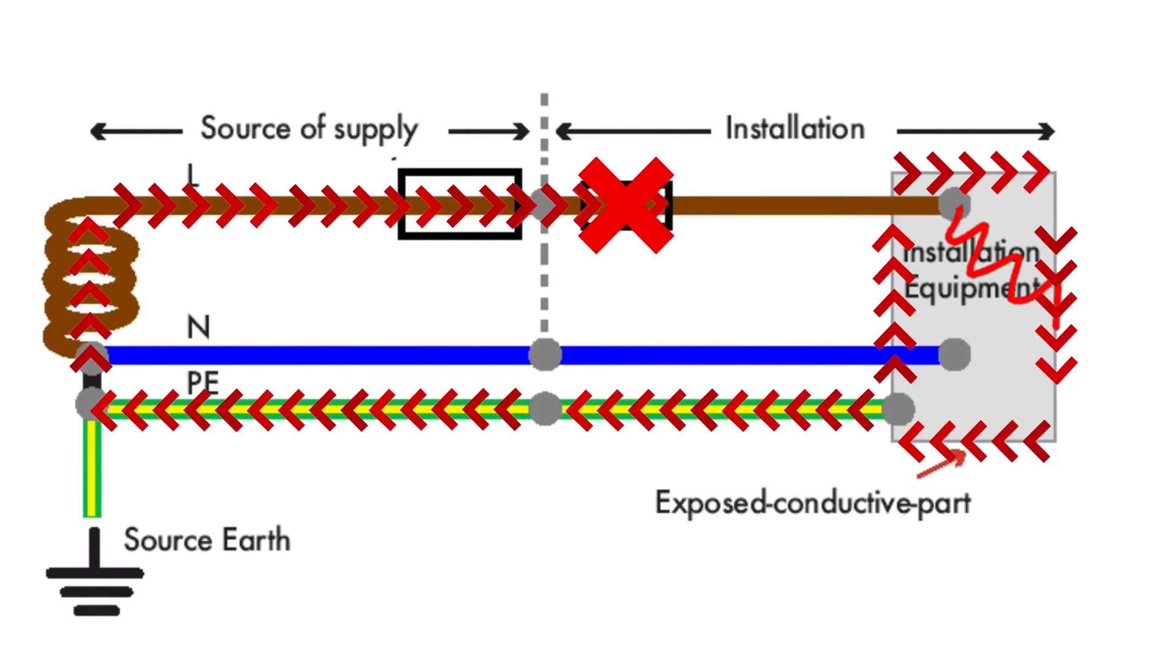This is the full earth fault loop path and needs to be a very low impedance in order to generate a very high fault current to cause rapid operation of the over current protection device.